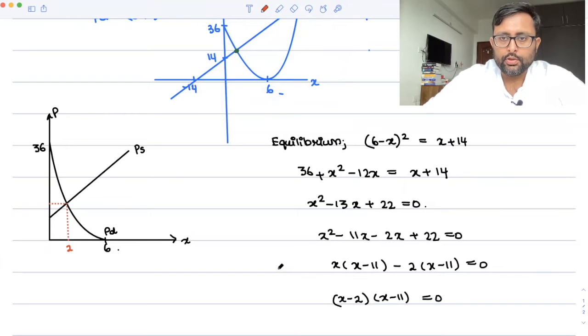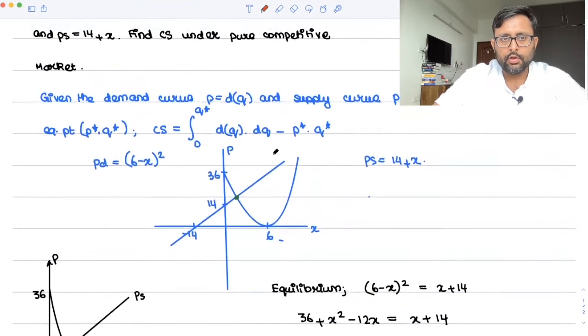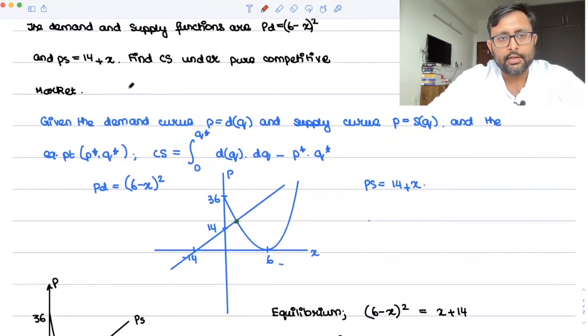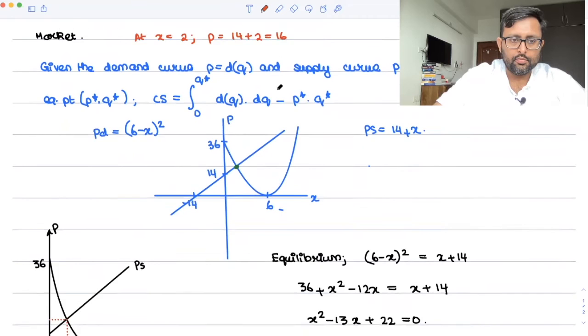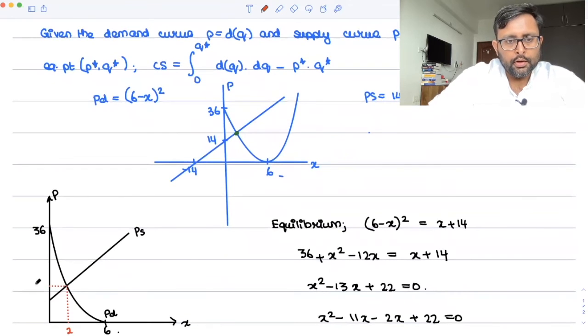So this is what 2 is. And at x equals to 2, you can just substitute x equals to 2 in either of the demand function or the supply function. So you have at x equals to 2, p is equal to 14 plus x, so 14 plus 2 which is 16.